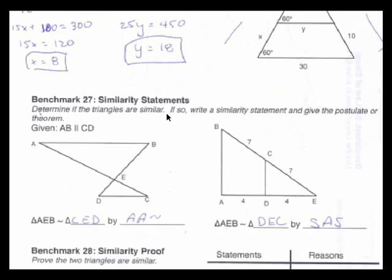As I scroll down here to benchmark number 27, similarity statements, this is to determine if the triangles are similar, and if they are, to write a similarity statement and give the reason. In our first example, we are given that AB is parallel to CD, and that's all we know.